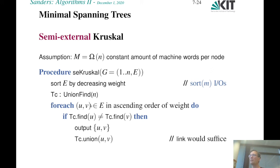The algorithm is semi-external because what we need in internal memory is an input buffer, an output buffer, and mainly the union-find data structure, which needs a constant number of machine words per node. In the algorithm engineering lecture, we see an implementation needing essentially one machine word per node. On our one-terabyte machine with roughly 5 bytes per node, we can handle graphs with up to around 200 billion nodes — which is really, really large.